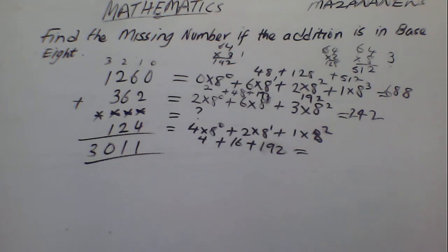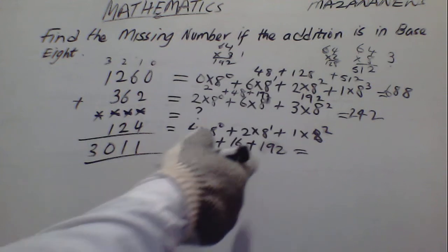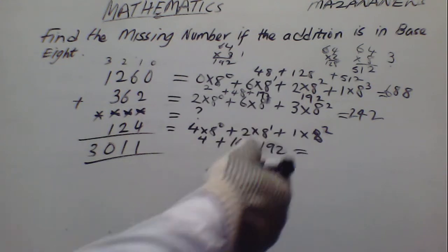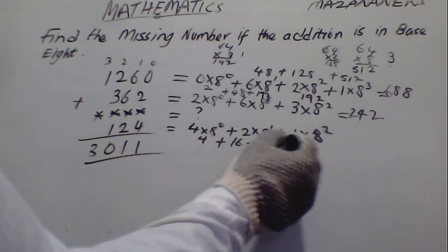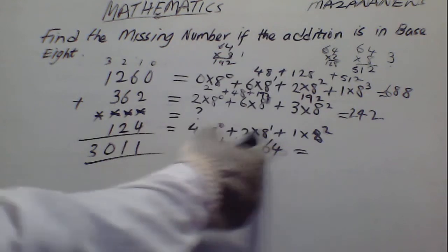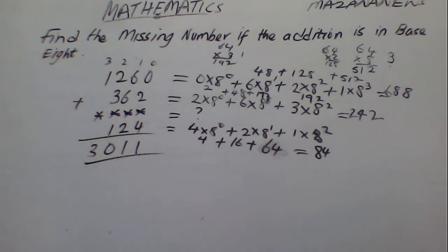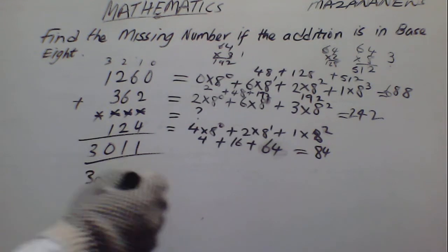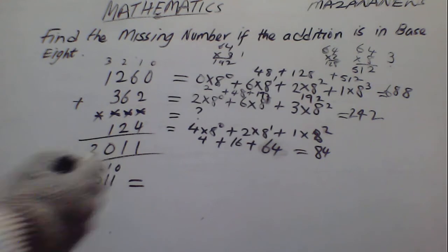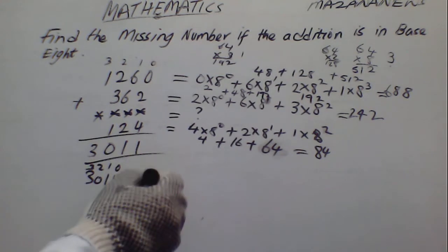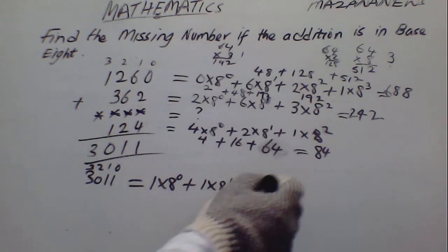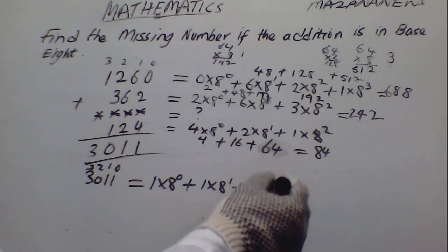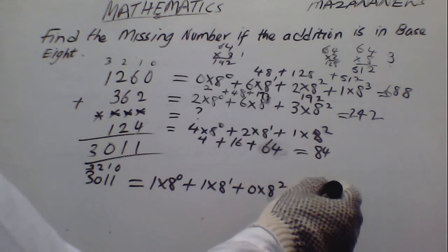So we proceed to solve it — you have to get the answer. 8 raised to power 2 here is 64. So from here we have 20, this is 84. The next number is 3011. Here is 0, 1, 2, 3. So from here we have 1 times 8 raised to power 0, 1 times 8 raised to power 1, 0 times 8 raised to power 2, 3 times 8 raised to power 3.